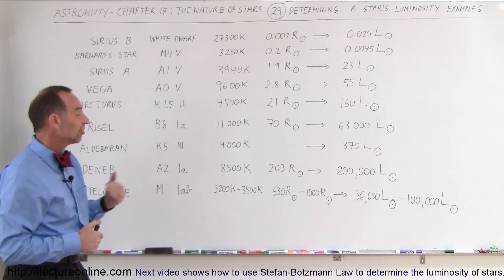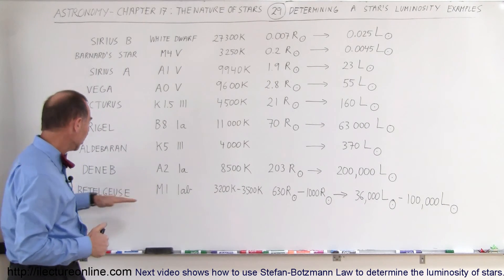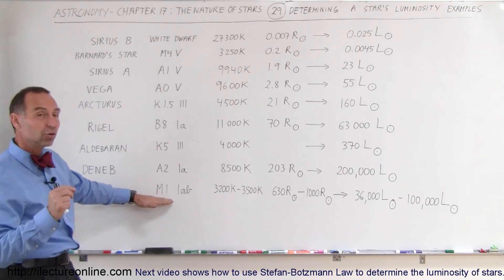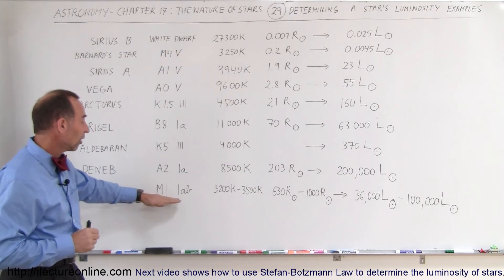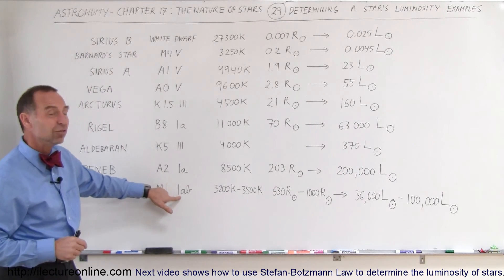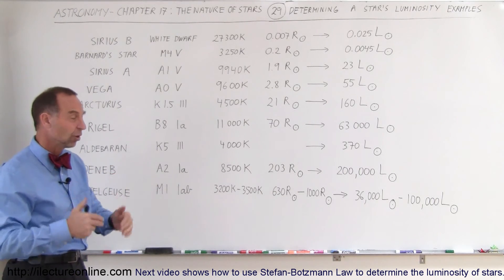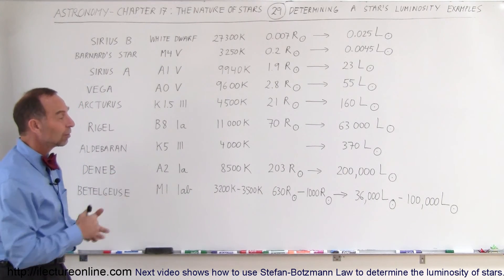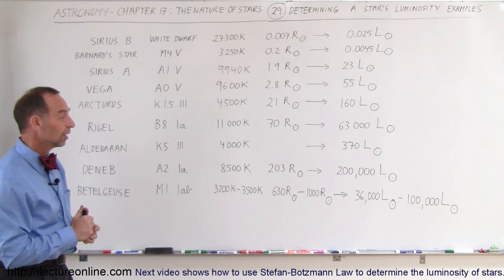Again, Betelgeuse is an M1 star, so it's a red star, not very high surface temperatures, but it's a 1AB star, meaning it's a very luminous supergiant, that's why it's so luminous compared to the luminosity of the Sun.